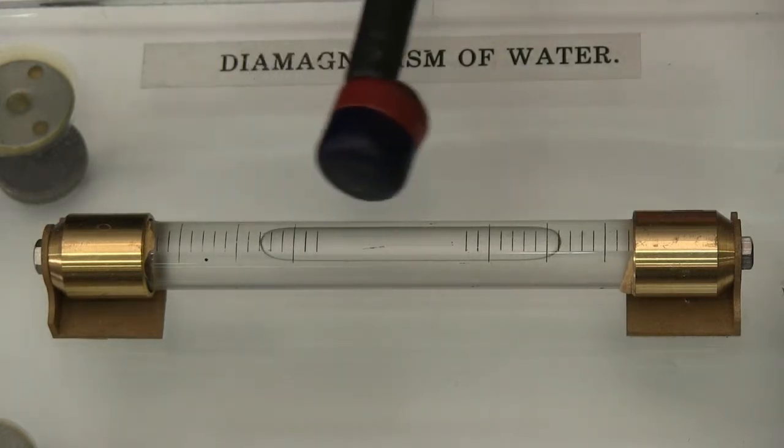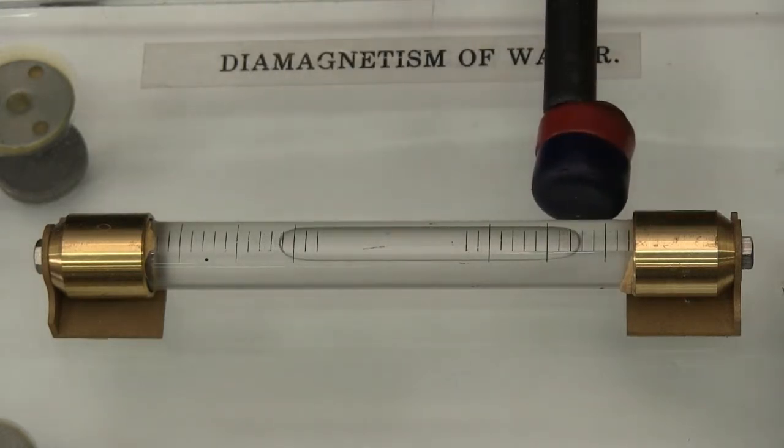I'll just flip this over to the other side of the spirit level just to make sure it's behaving the way it should. All right, so it looks as though that bubble is being pulled towards the magnet.